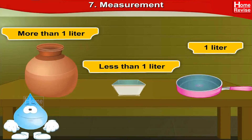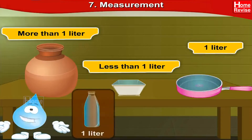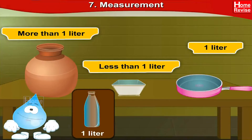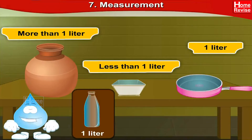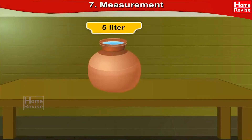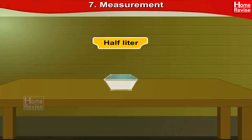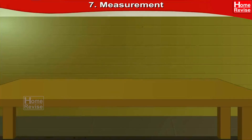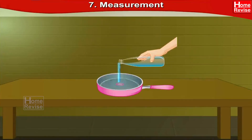Now we pour the water from this bottle and check how many liters of water these vessels can hold. The pitcher holds five liters of water, the box holds half a liter of water, and this pan holds one liter of water.